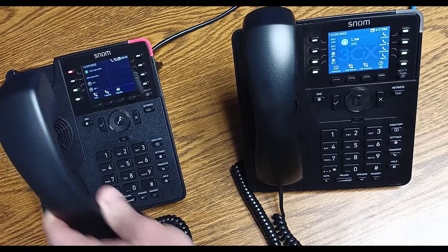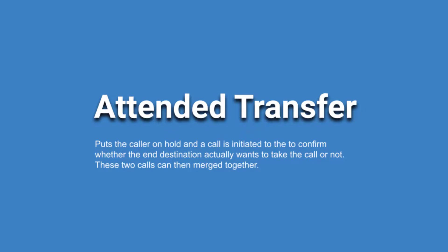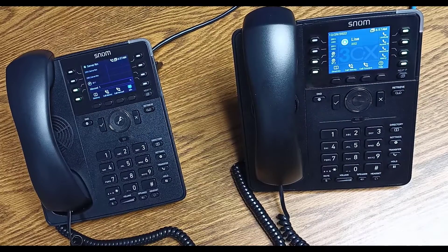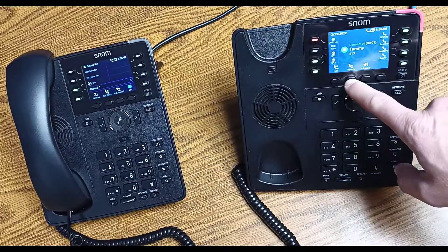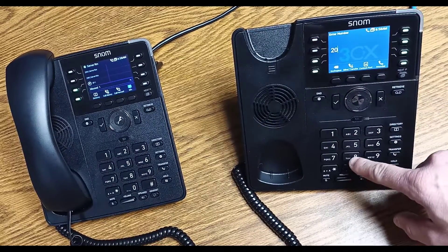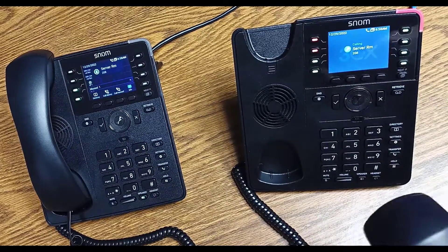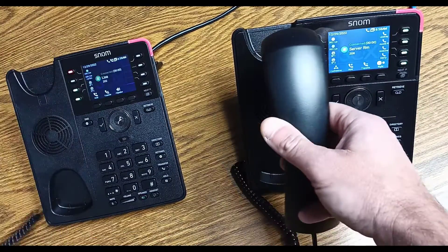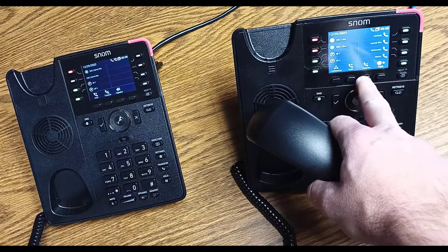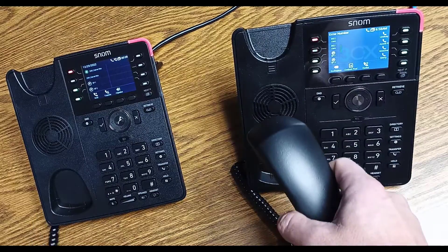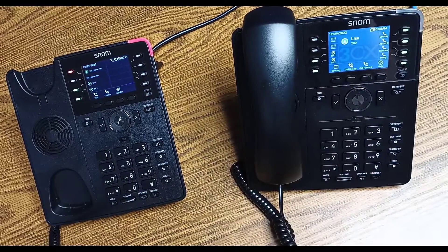Now I'm going to do an attended transfer. Call comes in, I press transfer, I'm going to dial the destination extension which is 208, and I'm going to hit attended. I pick up the handset, talk to the person, tell them so-and-so is on the call. They say yes, send them through — I press transfer and now I'm on the call with the person.